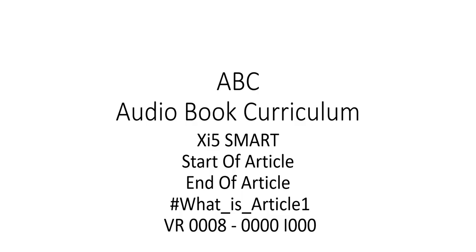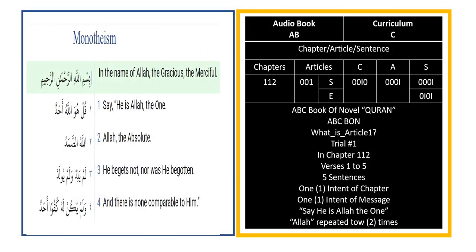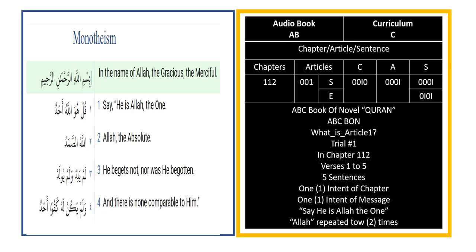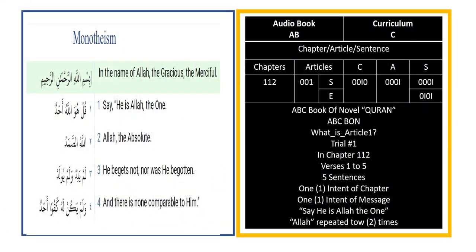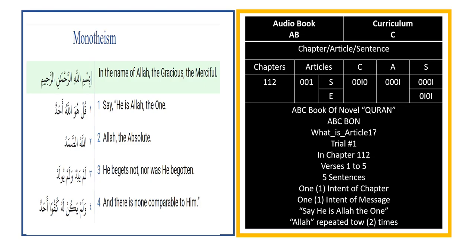From this table, it is developed to create machine language programming for article number 1, from the 10 last chapters in the Quran, which is chapters 105 until 114. So this book concentrates on these 10 last chapters.